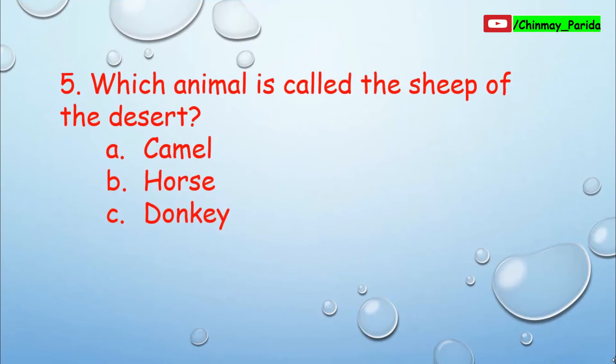Question number 5. Which animal is called the ship of the desert? Very easy. Option A: camel, option B: horse, option C: donkey. The correct answer is option A, camel.